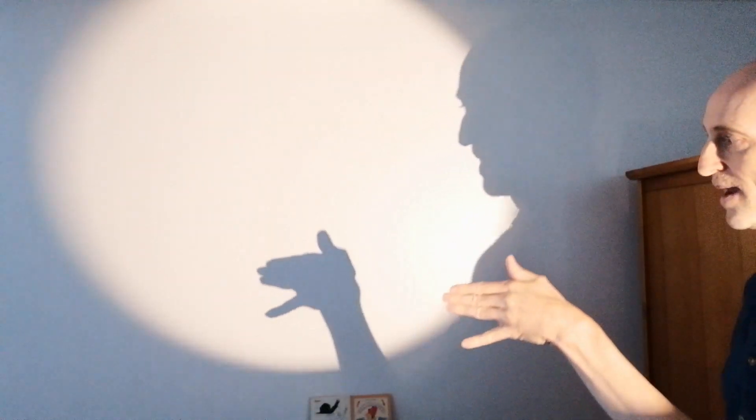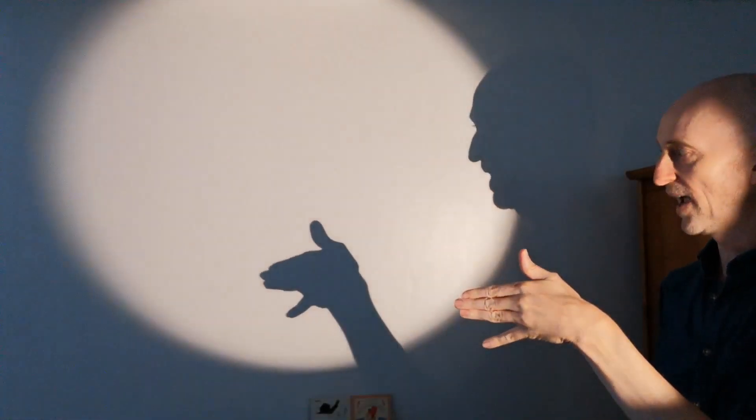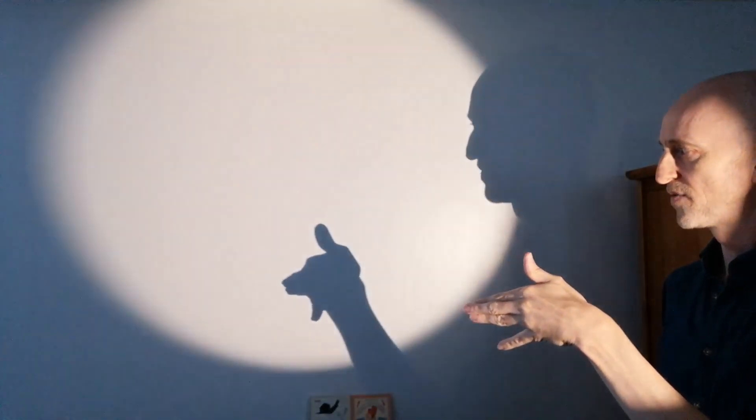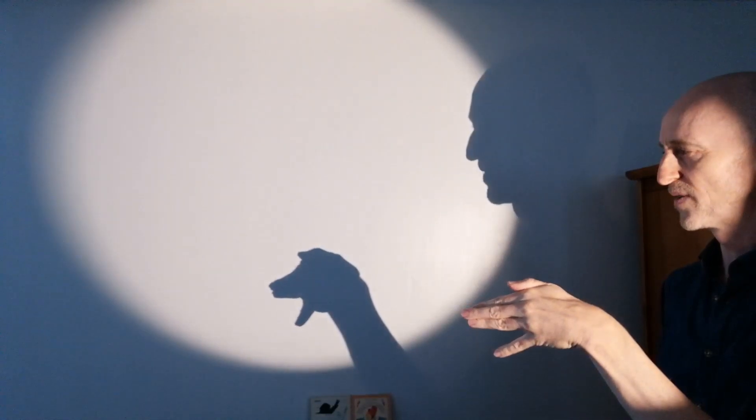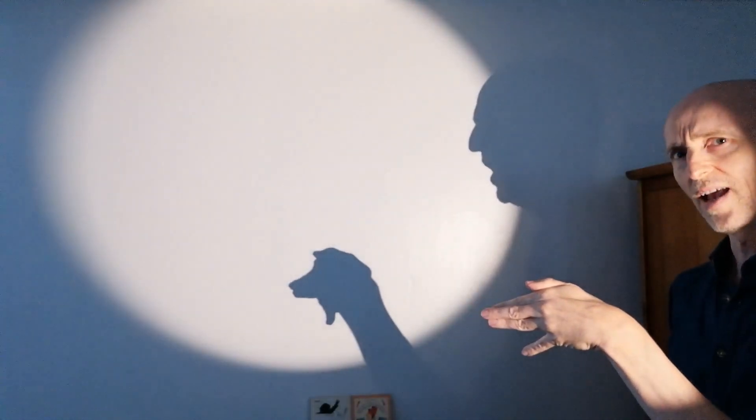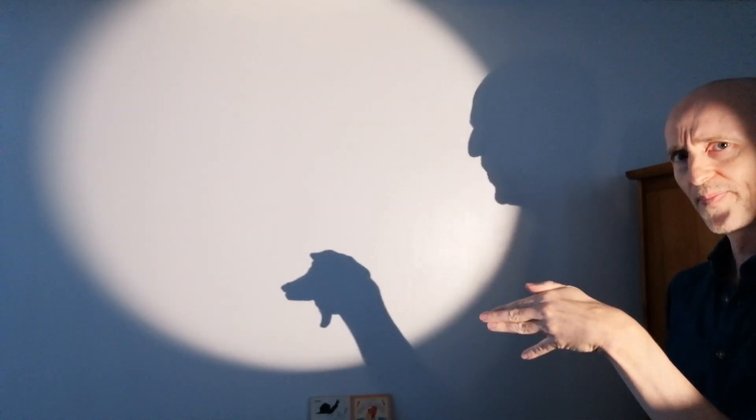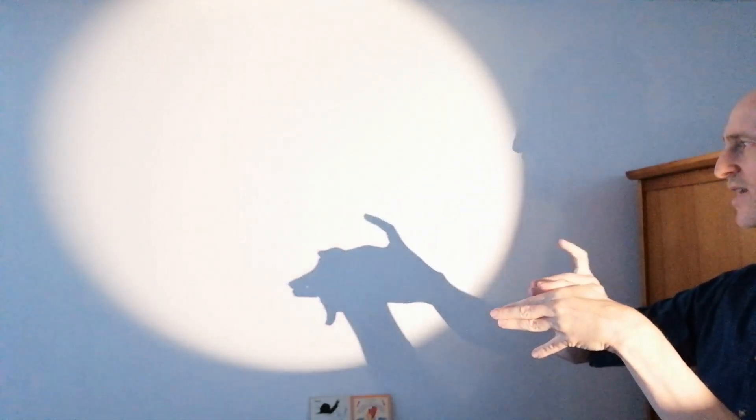I'm going to try and switch hands and see if I can do it that way. So again, this is the pig's head. Curl the fingers away from the light and bend this finger to make the ear. Now that to me is a very pig-like head and front leg. Let's see if we can add the back tail.